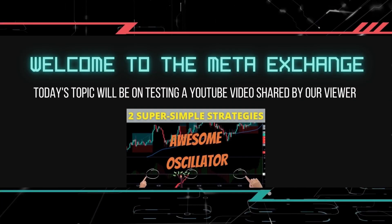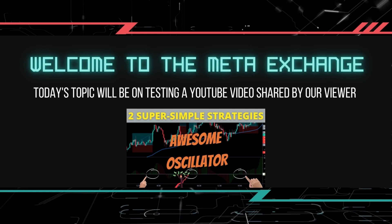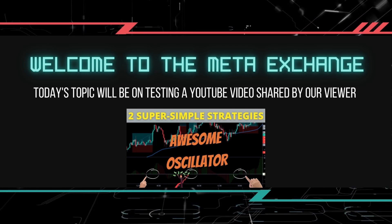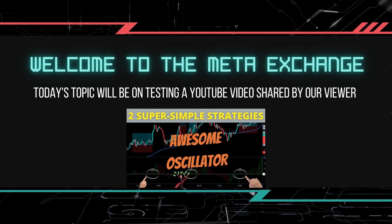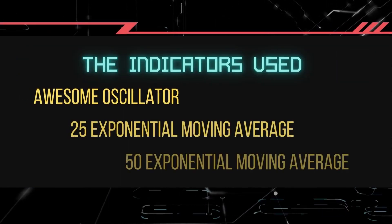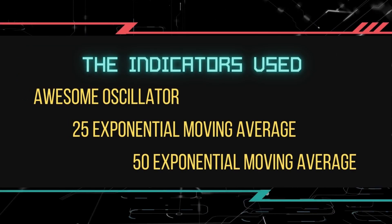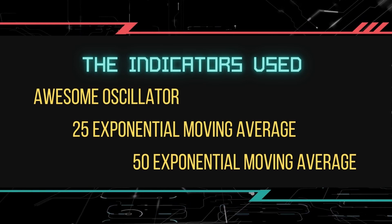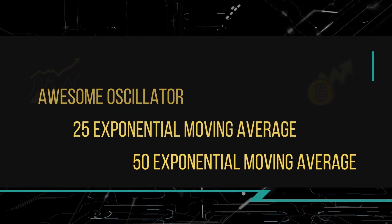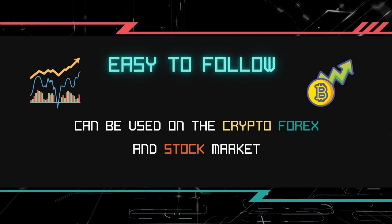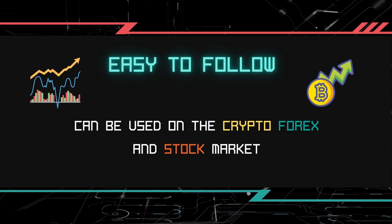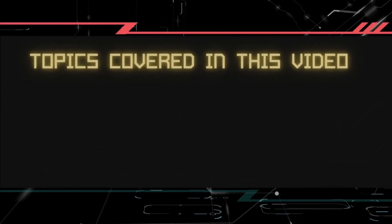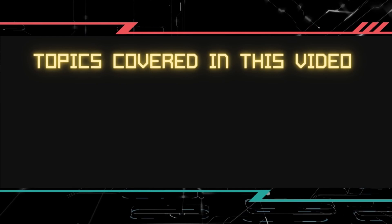Hello everyone and welcome to the MetaExchange. In today's video, we will be testing a strategy from a YouTube video that our viewer has shared with us. It uses the awesome oscillator and two moving averages, namely the 25 and the 50 exponential moving average. This strategy is easy to follow and it can be used on crypto, forex and stock markets. We have grouped the content into five informative sections for you.